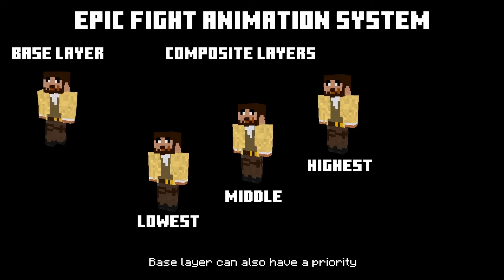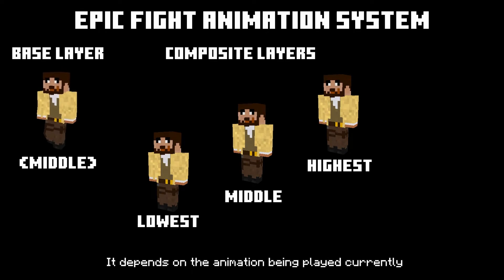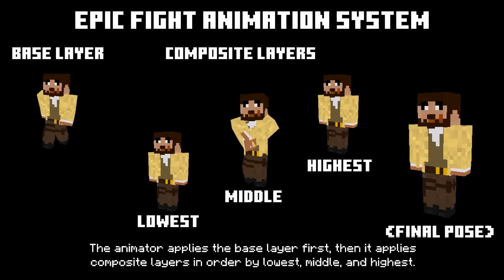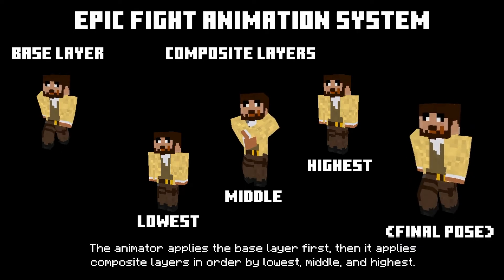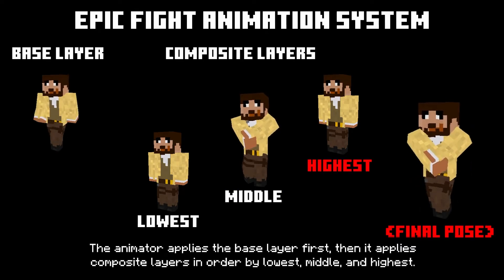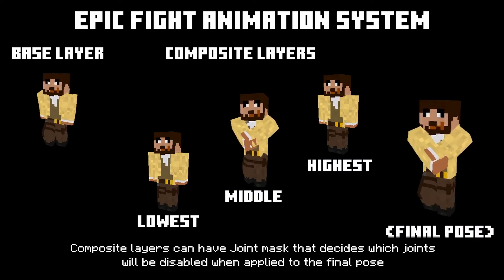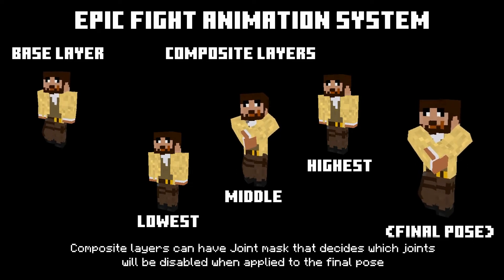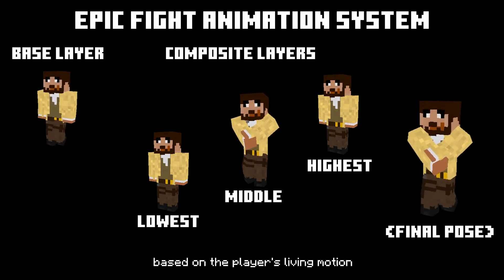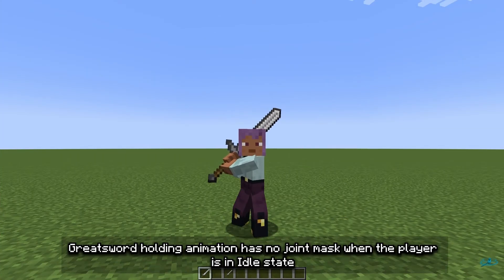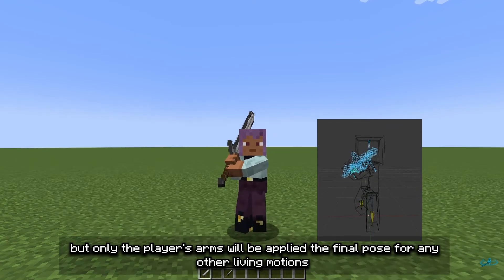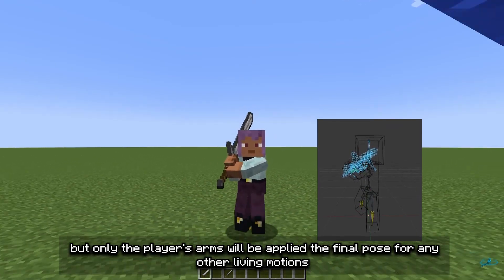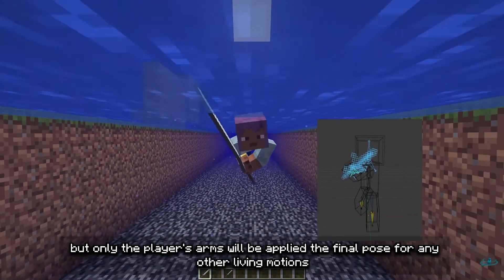The base layer can also have a priority, depending on the animation being played currently. The animator applies the base layer first, then applies composite layers in order: lowest, middle, and highest. Composite layers can have a joint mask that decides which joints will be disabled when applied to the final pose based on the player's living motion. For instance, a greatsword holding animation has no joint mask when the player is in idle state, but only the player's arms will be applied to the final pose for any other living motions.